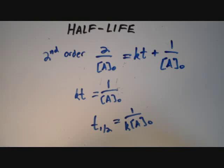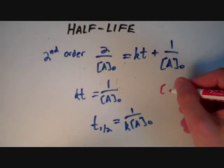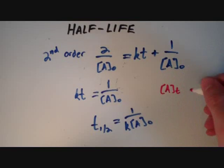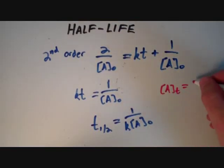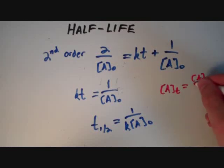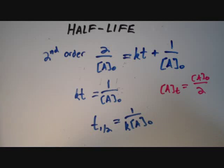So what did we do in this video? We started out with the integrated rate law for each order, then substituted the concentration of A at time T by saying that if we're dealing with half-life, that concentration is just one-half of the initial concentration. Then we just algebraically solved for T. So as long as you know the integrated rate laws, you can figure out the half-life — you don't just have to memorize the expressions.